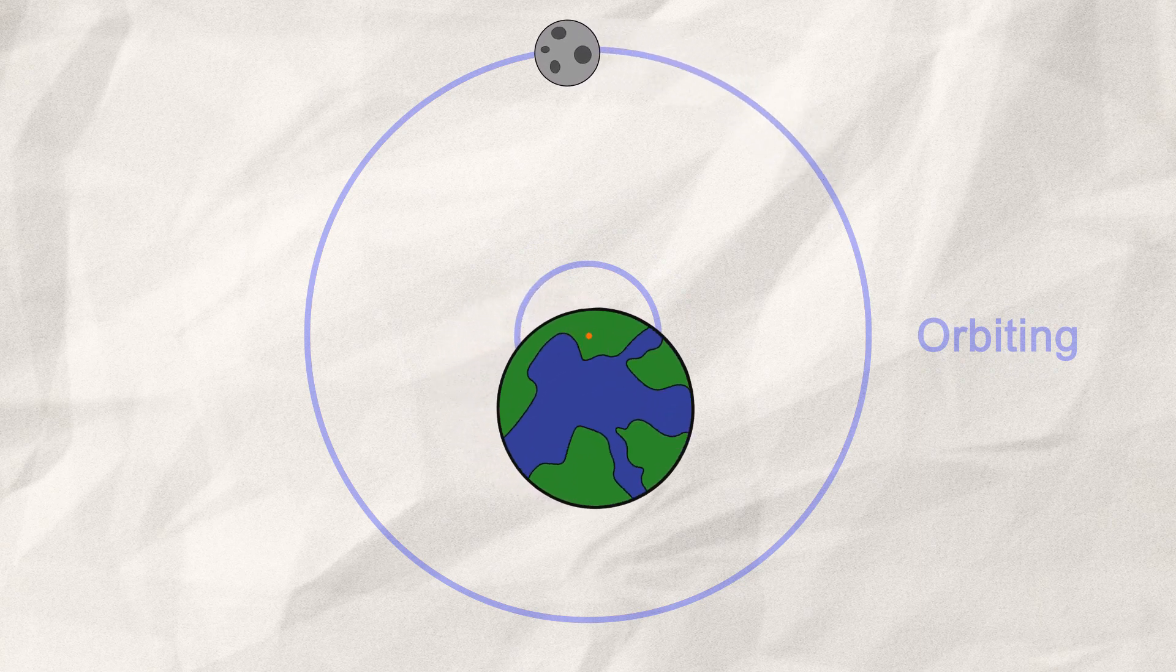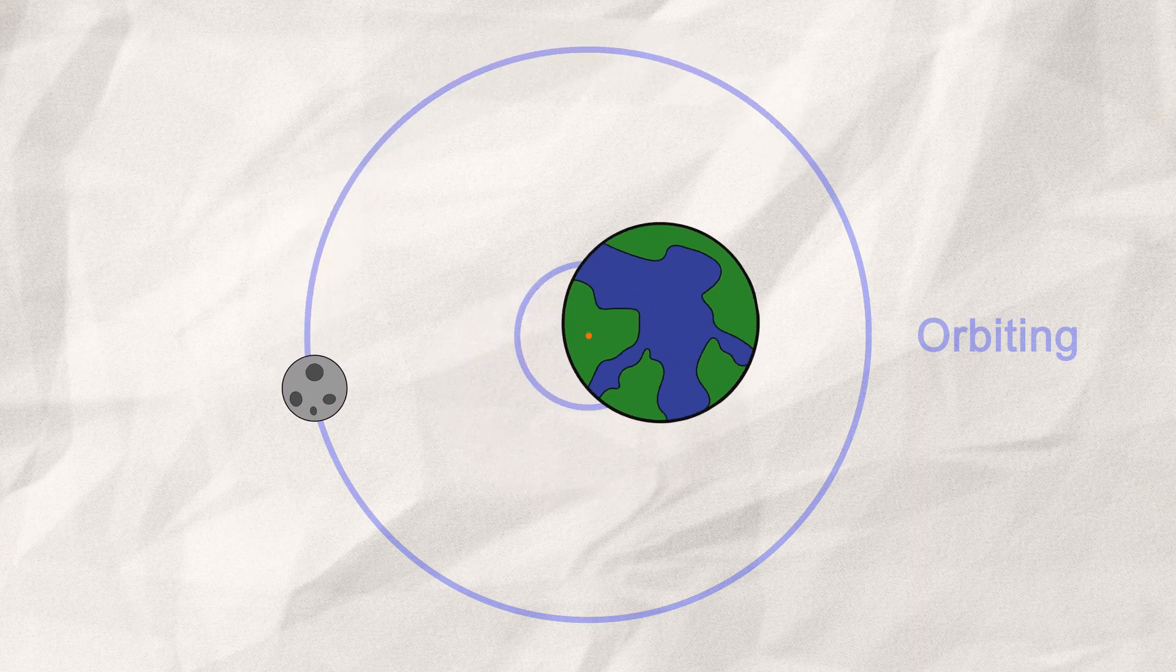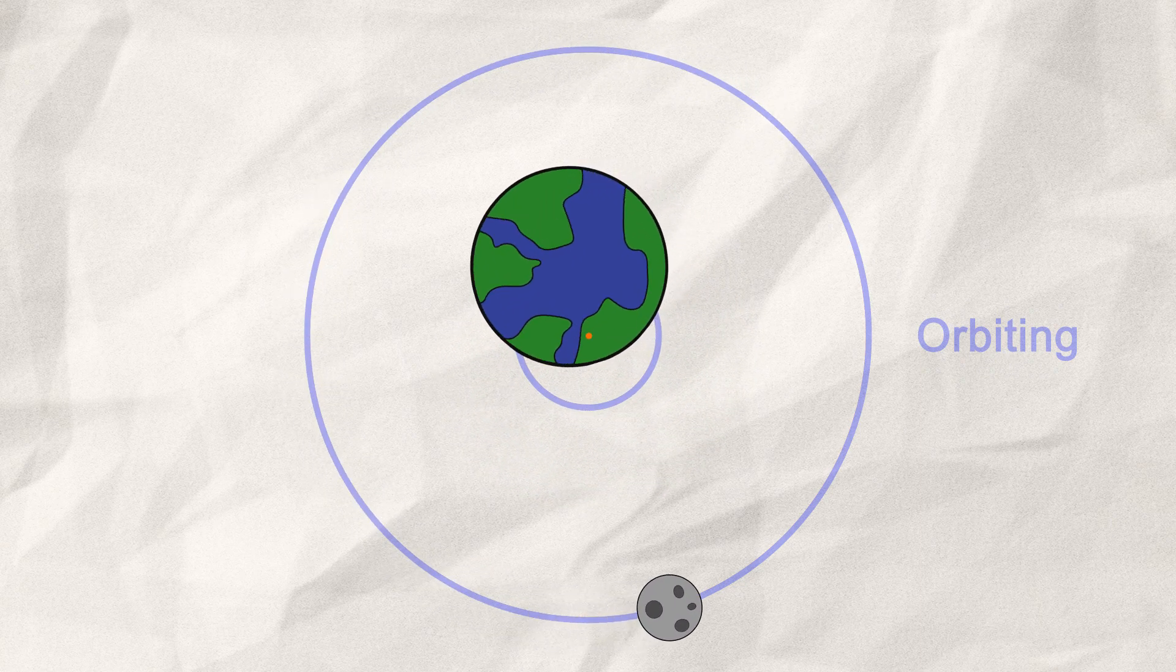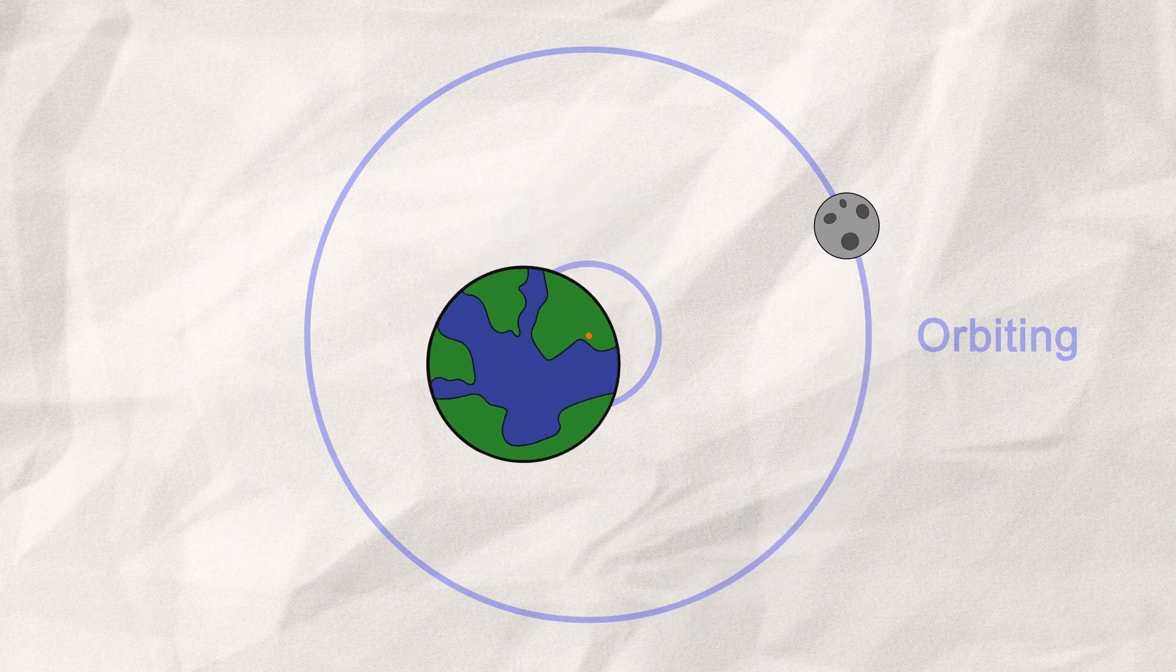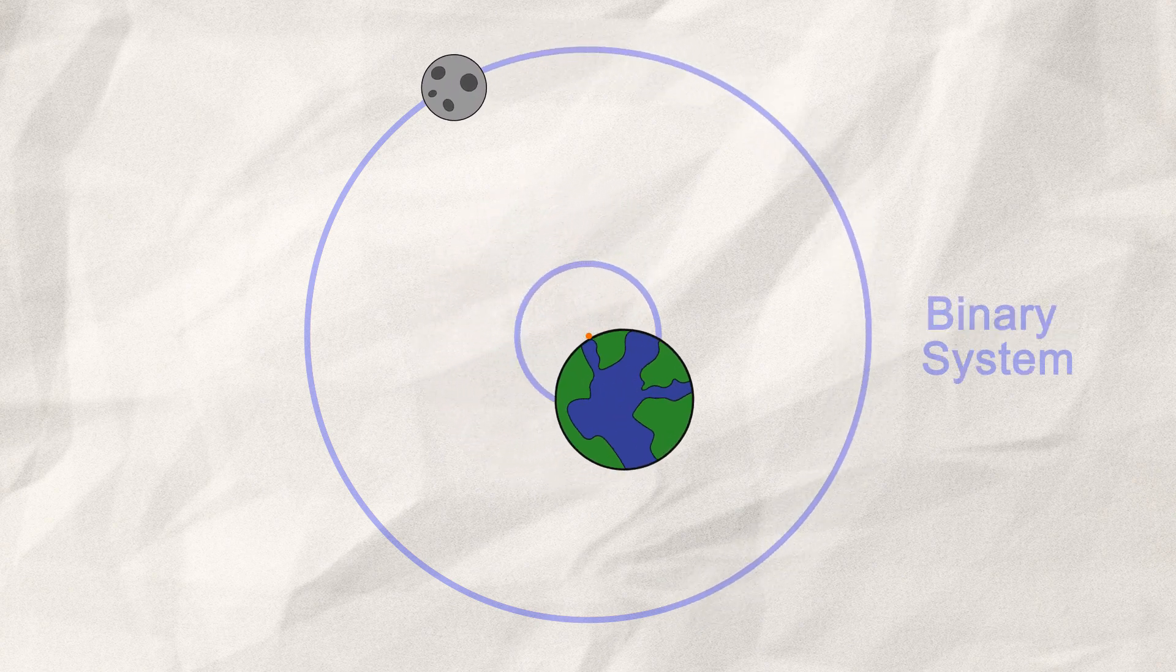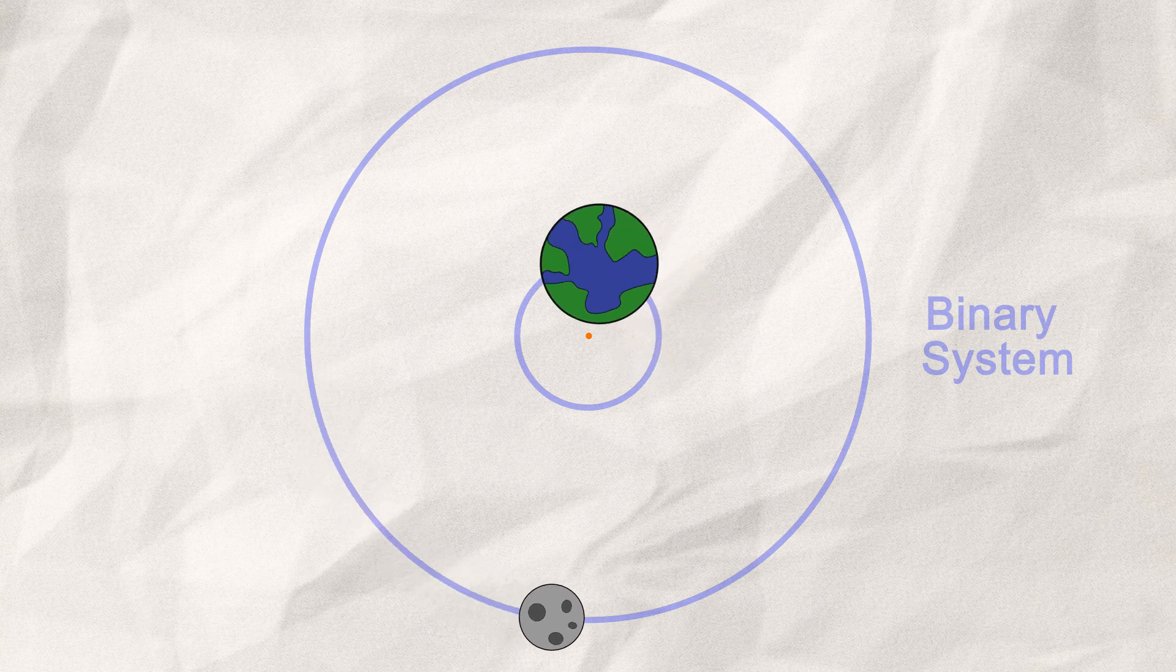Let's go back to the Earth and Moon. Right now, their shared barycenter is inside the Earth. So our Moon is orbiting. But imagine if our Earth kept its mass but shrunk in diameter. Now we've created a binary system.